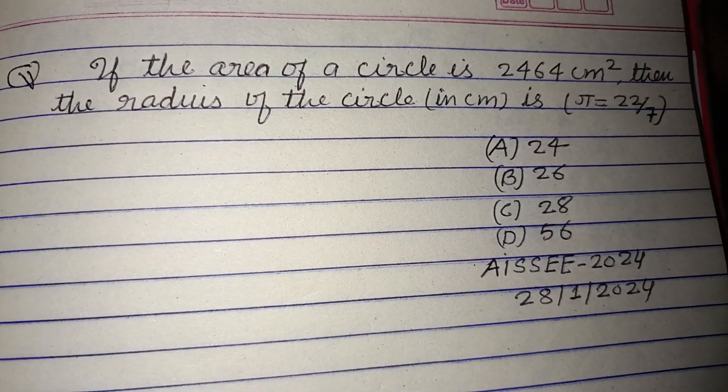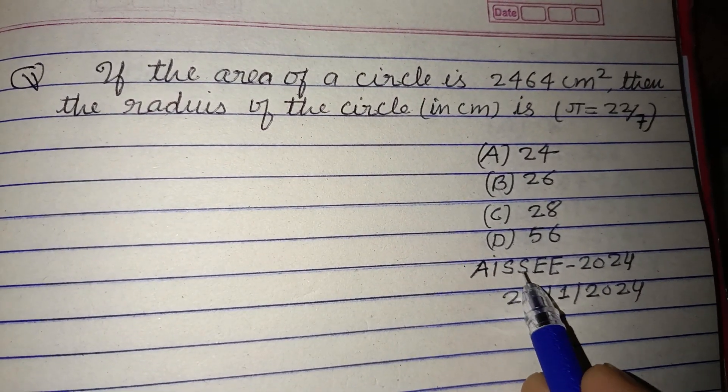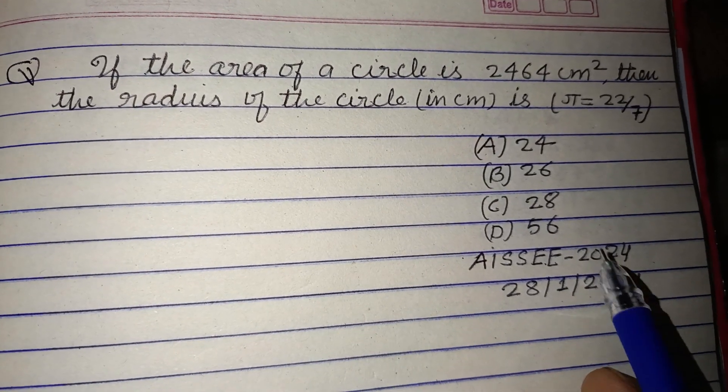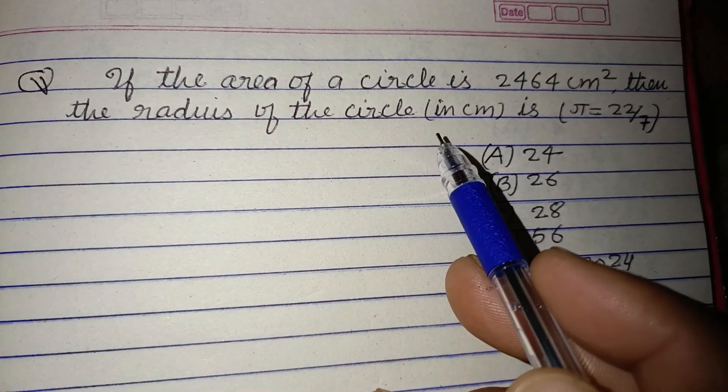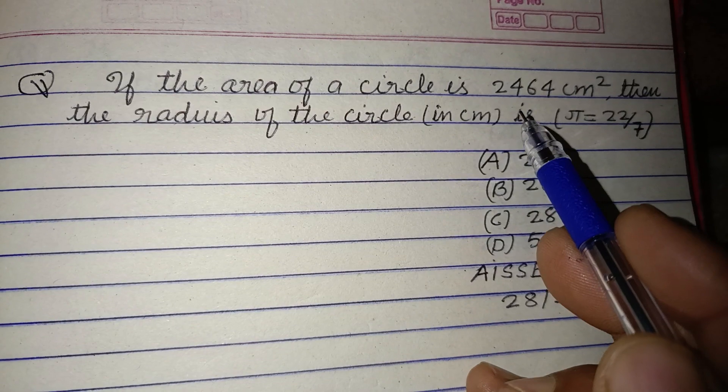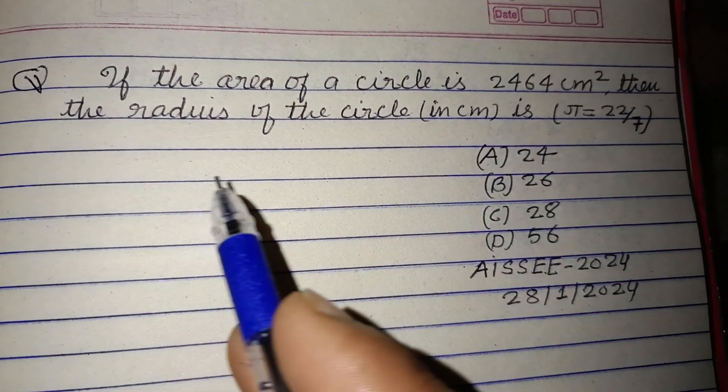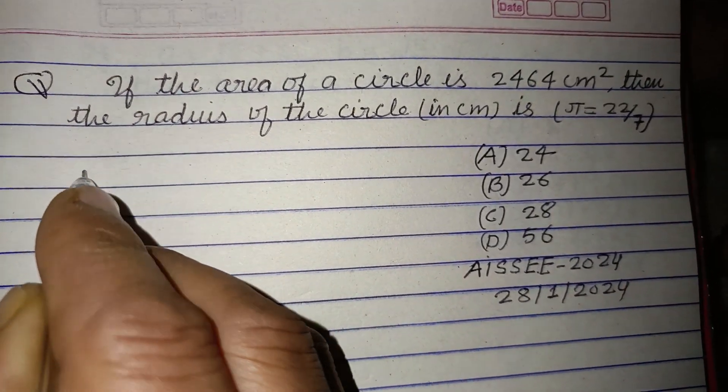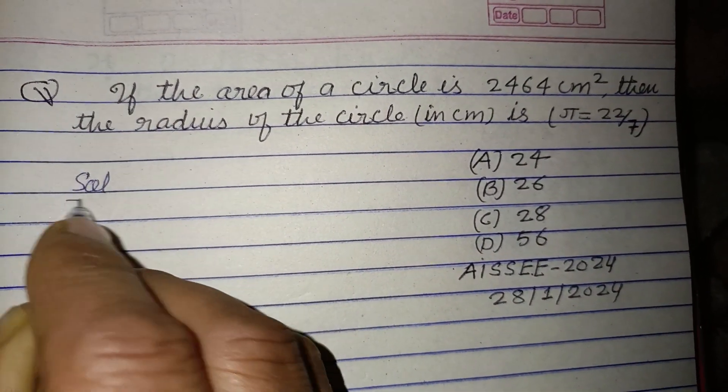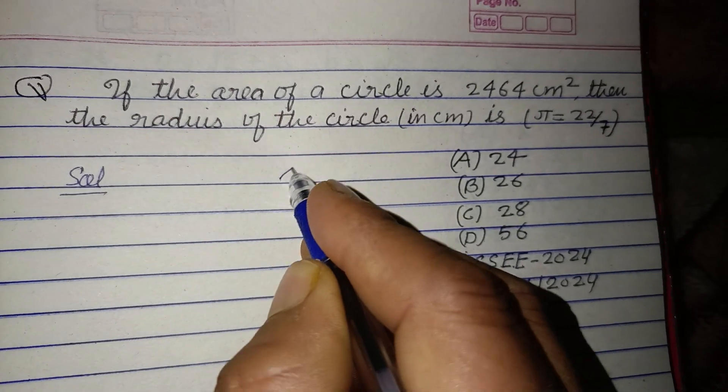Hello viewers, warm welcome to this YouTube channel. Question from All India Senior Secondary Entrance Exam 2024: If the area of a circle is 2464 centimeter square, the radius of the circle in centimeter will be. So student, here a circle with radius r, O is center.